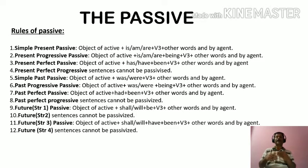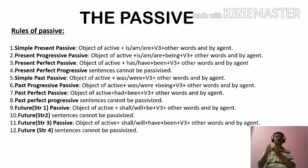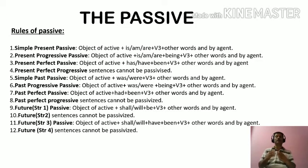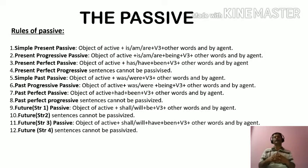They cannot be transformed into passive voice. Now let us go through future structure one passive. The rule is: the object of active plus shall or will plus be plus past participle form of the verb plus other words and by agent.